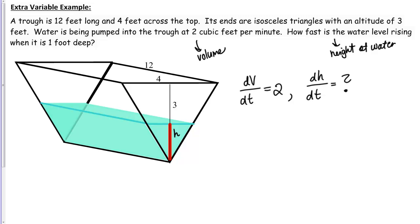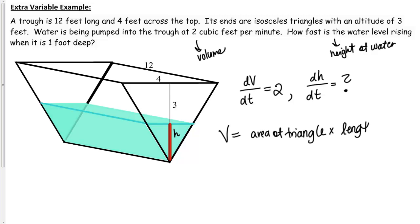Next, we want to find some sort of relationship between the variables in our story. We've got the volume of the water in the trough and the height of the water in the trough. A geometric formula is going to be useful here — specifically the volume of the trough. In general, the volume of any three-dimensional shape like this is the area of the face times the length of the shape, which in this case is the area of the triangle times the length of the trough.